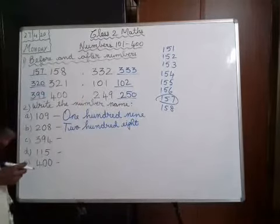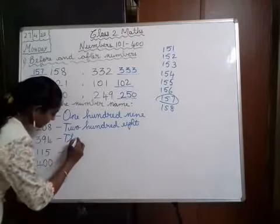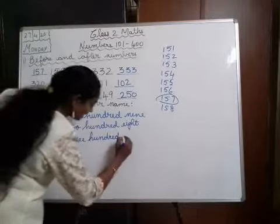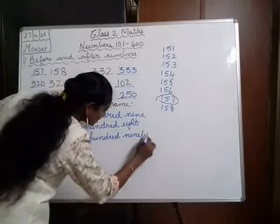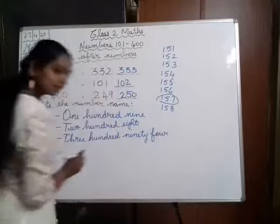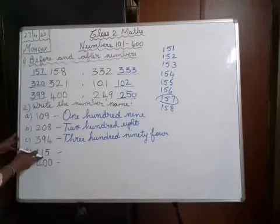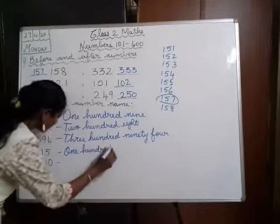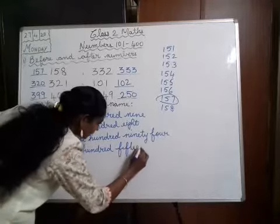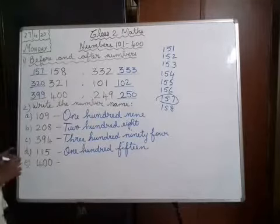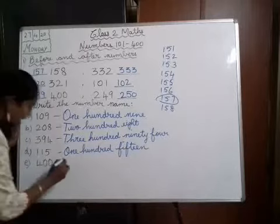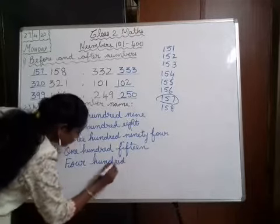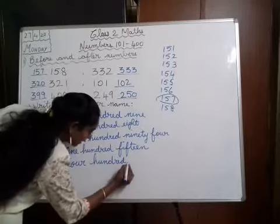Don't make mistakes. Next, 394. First you write three, then hundred, then 300, then 94 — three hundred and ninety-four. Next, 115 — one hundred and fifteen. Write the spelling correctly. Next, 400 — F-O-U-R H-U-N-D-R-E-D. Don't make mistakes in writing the spellings.